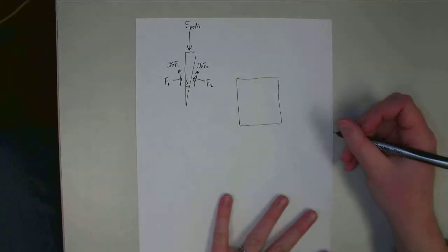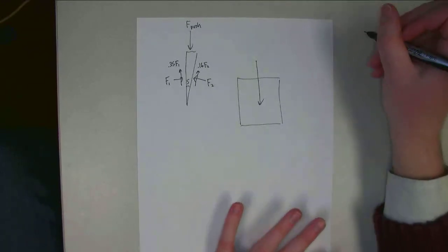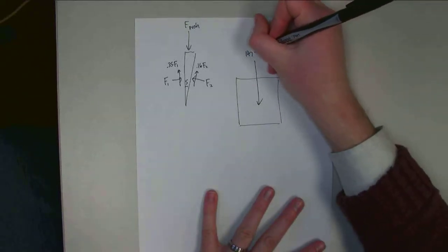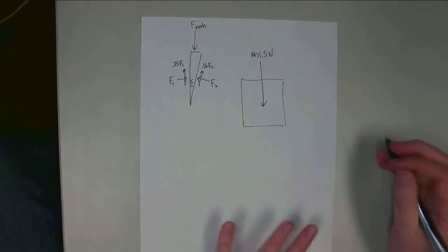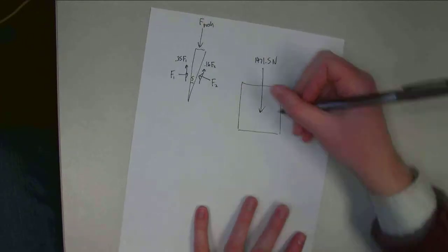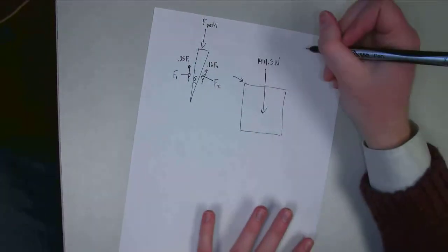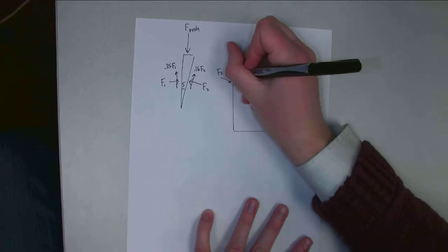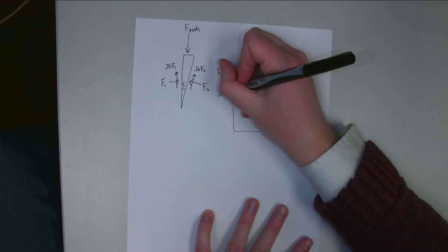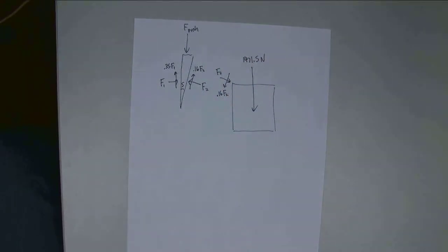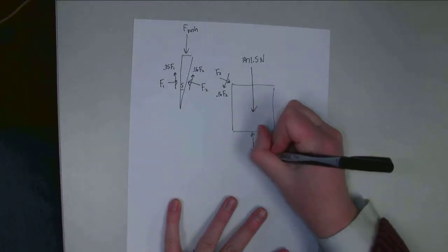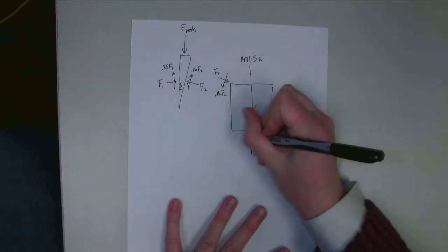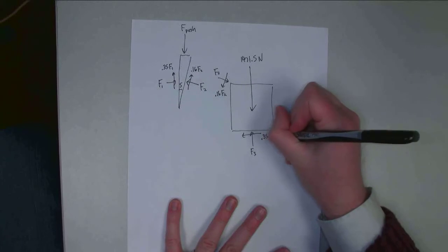Now over on the safe, I have the weight force: 150 kilograms times 9.81 gives 1,471.5 newtons. The wedge pushes a normal force F2 on the corner of the safe — equal and opposite to the F2 on the wedge. On the bottom, I have a normal force F3 and a friction force of 0.35 times F3, opposing the sliding of the safe away from the wall.